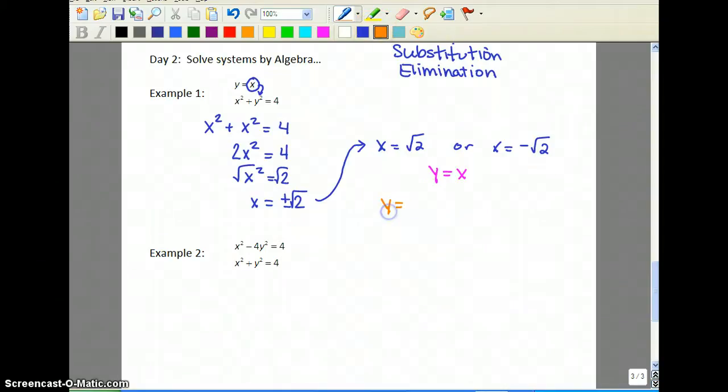So if you plug back in, you'll get y is equal to root 2. So this answer would be root 2 comma root 2, or y would be equal to negative root 2. So the other answer is negative root 2 comma negative root 2. And those are your two solutions.